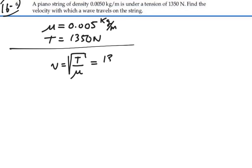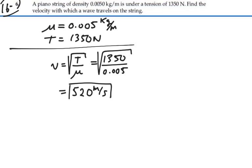So this is going to be 1350 divided by 0.005, all that square root, and that's equal to 519.6. So we'll say 520 meters per second. The velocity of waves on this piano string is 520 meters per second.